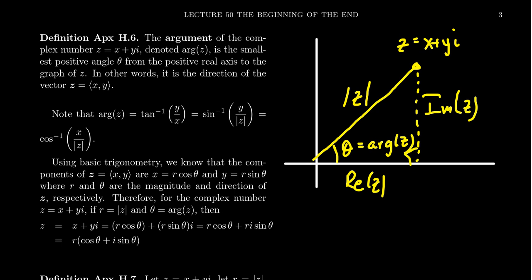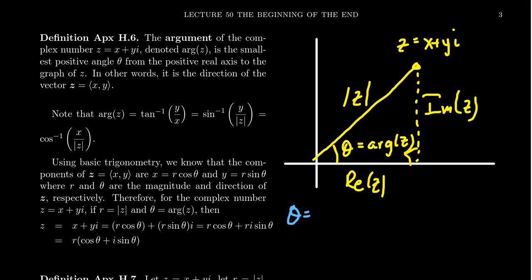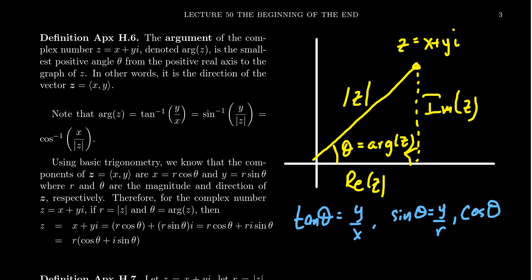The argument essentially gives the direction of the complex number in the plane. If you know the three sides of the triangle associated with this complex number, there are many ways of computing theta. We can do a tangent ratio: tangent of theta equals y over x, the imaginary part over the real part. You could also do sine of theta, which equals y over r — the complex modulus — or cosine of theta equals x over r. You could even do cotangent, secant, or cosecant — whichever you prefer.